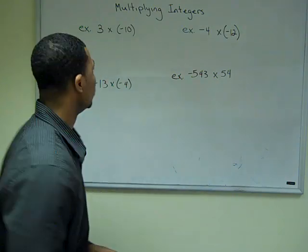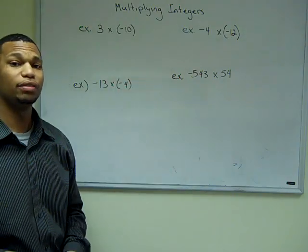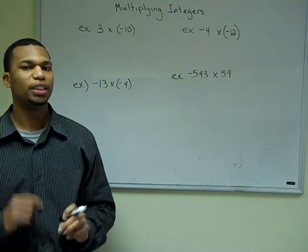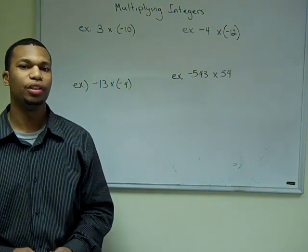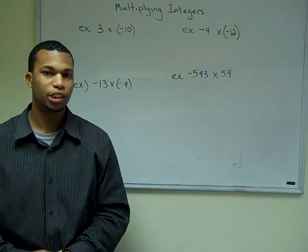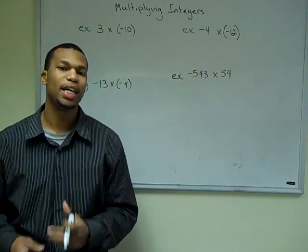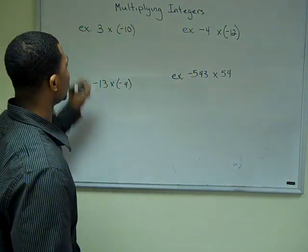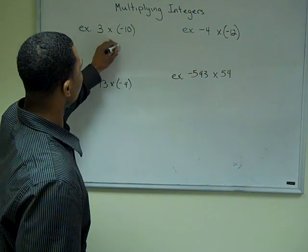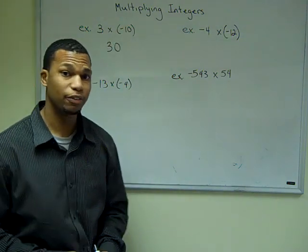In our first example, we have 3 times negative 10. Remember our second rule: if the signs are different, then our answer is going to be negative. So first we're going to just blindly multiply — 3 times 10 is equal to 30 — but since the signs are different, our answer is going to be negative 30.